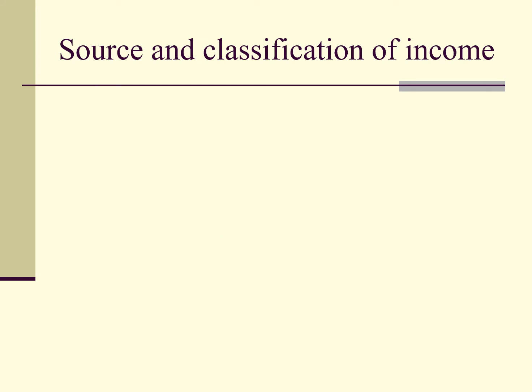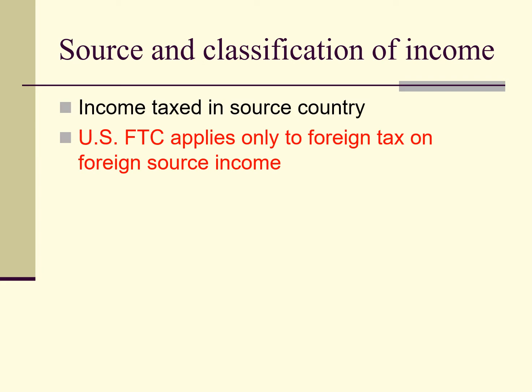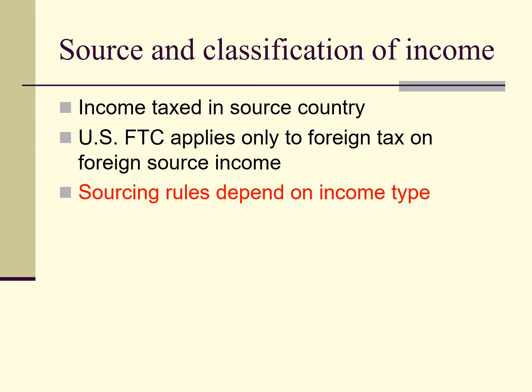The first topic covered in Unit 9 will be the source and classification of income. In most countries, including the United States, the ability of a country to tax a company's income depends on whether the country is the source of that income. In addition, in the United States, the foreign tax credit, which is supposed to prevent U.S. taxation of income already taxed in a foreign country, applies only against foreign tax imposed on foreign source income. Because of the importance of the rules for determining the source of income, we will spend a fair amount of time on this subject.